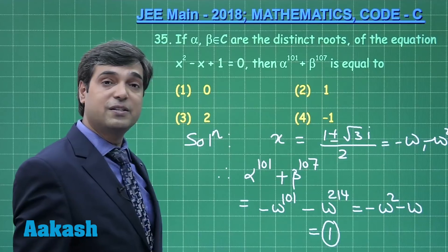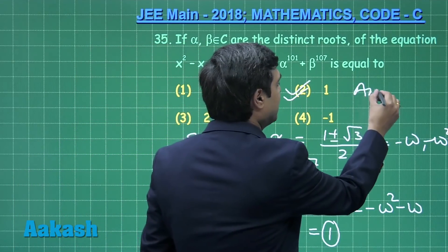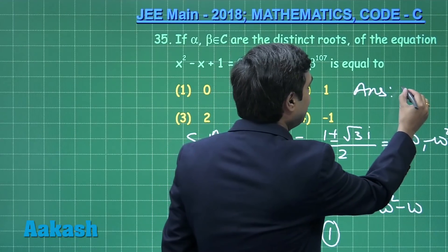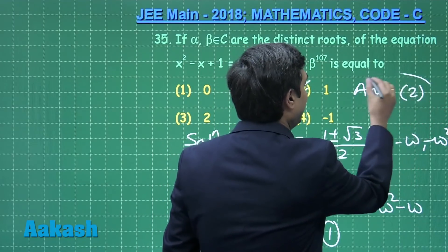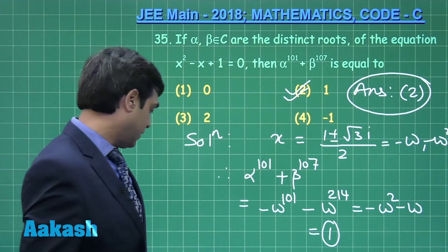It gives me minus omega square minus omega, or simply equal to 1. From the given options, we can see the answer is 2. A simple question from the combination of complex numbers as well as quadratic. This is clear. Let us move to the next question.